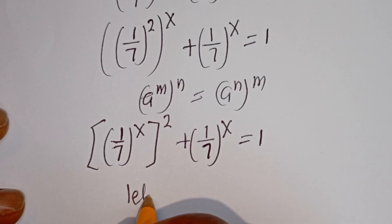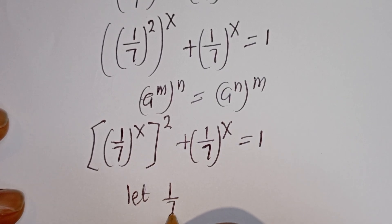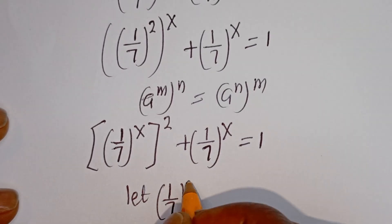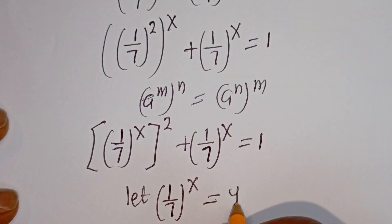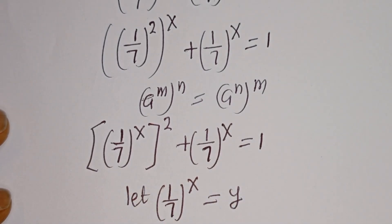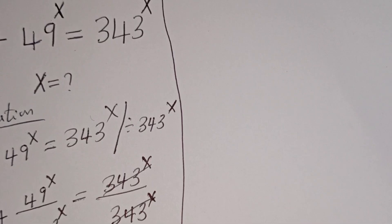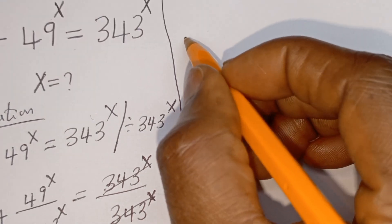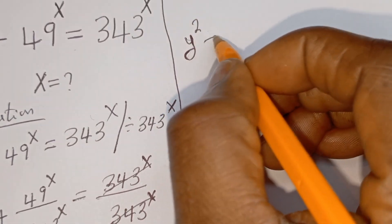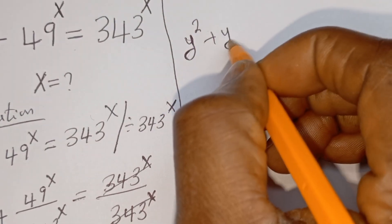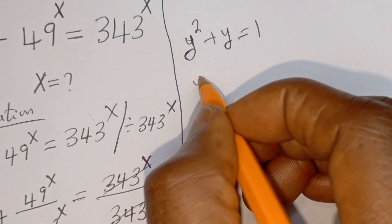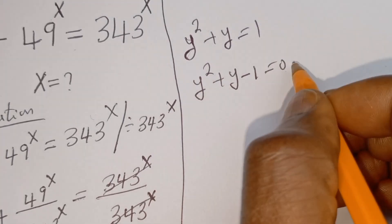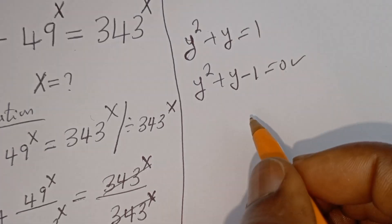Now let 1 over 7 to the power of S equal Y. Then we have Y squared plus Y is equal to 1, so Y squared plus Y minus 1 is equal to 0. This is a quadratic equation.